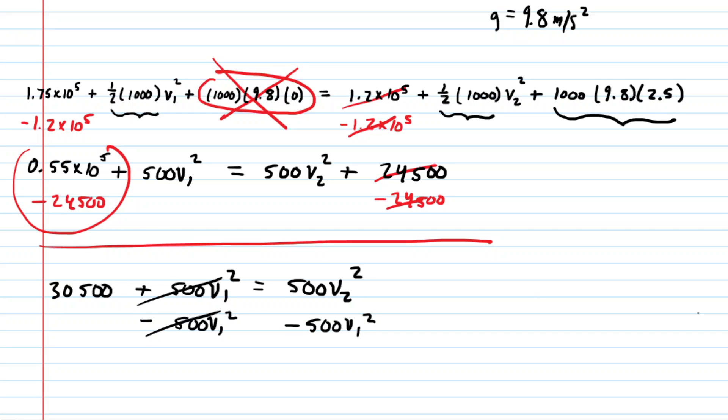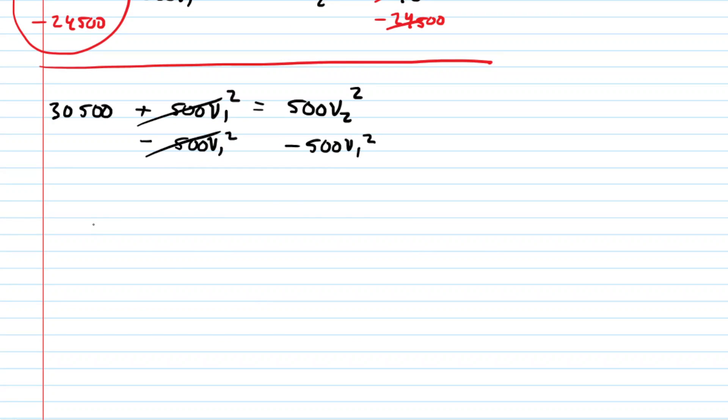This cancels it out on the left-hand side. And what's interesting here is that we have the same coefficient in front of our two velocity squareds. So we'll divide each term of the equation by that coefficient, divide everything by 500. That will cancel it out completely on the right-hand side. We're left with 61 on this side, and this is equal to v sub 2 squared minus v sub 1 squared.